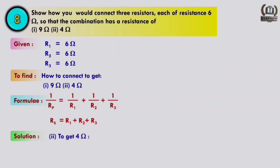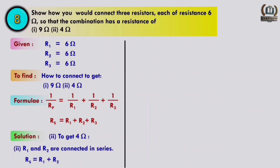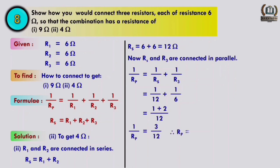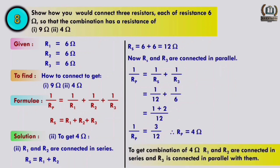To get 4 ohm: connect R1 and R2 in series, Rs = 6 + 6 = 12 ohm. Then connect Rs and R3 in parallel. Using 1/Rp = 1/12 + 1/6, we get Rp = 4 ohm. So to get 4 ohm, R1 and R2 are connected in series and R3 is connected in parallel with them.